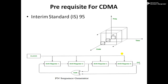Now, the prerequisites for CDMA. IS-95 stands for Interim Standard 95, also known as cdmaOne. It was the first ever CDMA-based digital cellular technology and was developed by Qualcomm. It is a 2G cellular system based on DS-CDMA — Direct Spread Spectrum CDMA. To understand IS-95 we need to understand DS and CDMA separately.